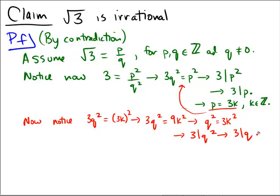Now, I forgot to mention one other assumption here, that when we wrote it as p over q, we're going to assume that p and q are in the lowest terms. So assume that rad 3 equals p over q, in lowest terms, for p, q in integers and q not equal to 0.